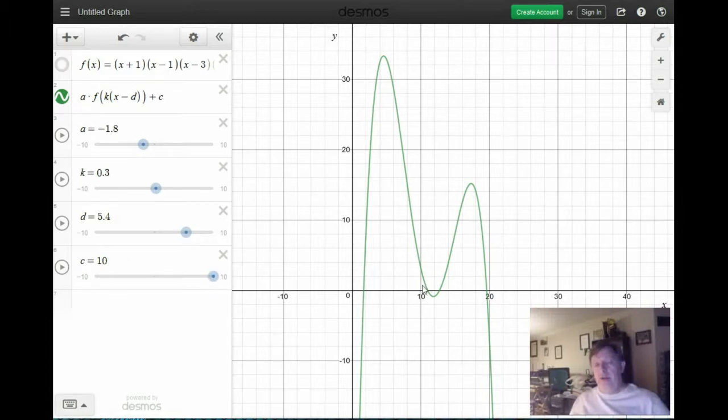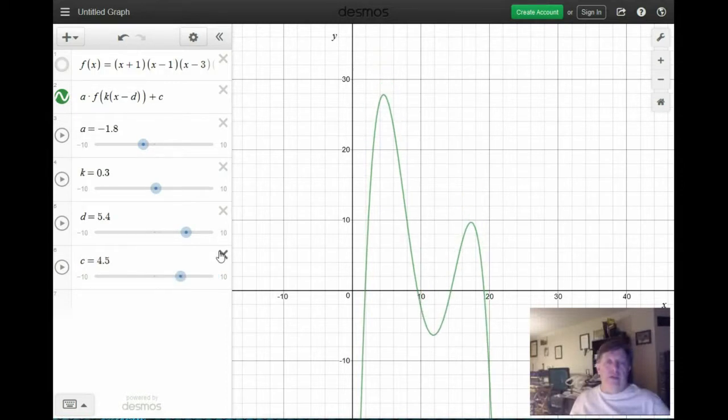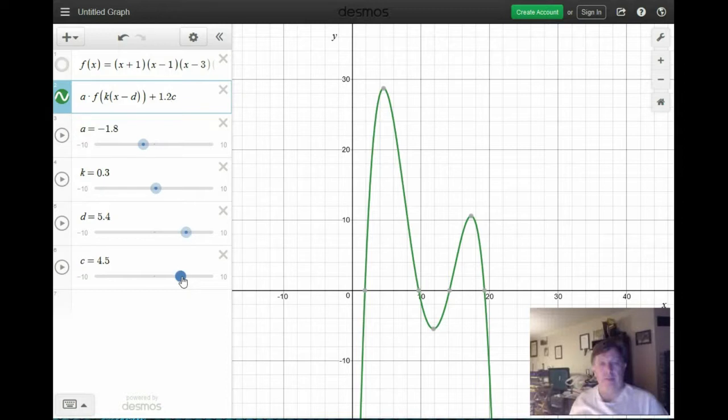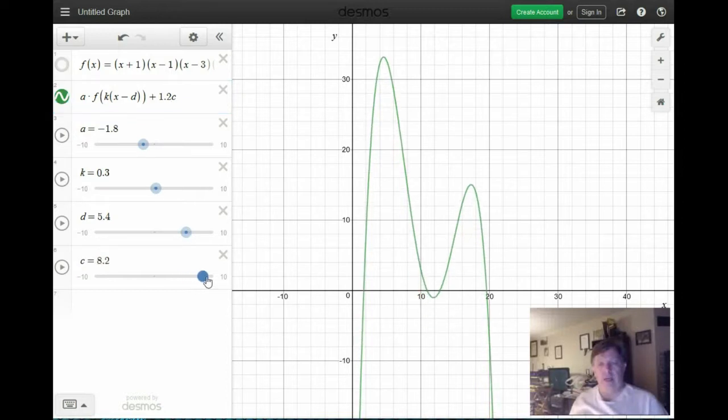So what I can do is maybe modify c. So if I now have a multiplier, maybe 1.2, 1.2 times c, let's see what happens if I do that.